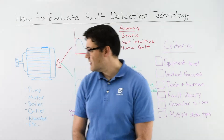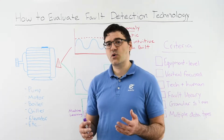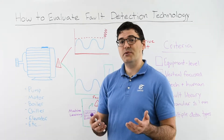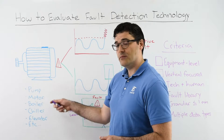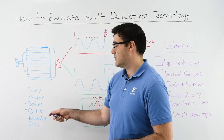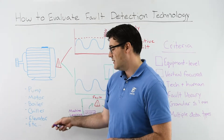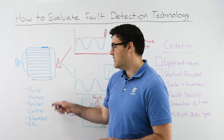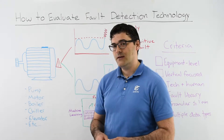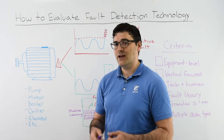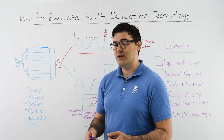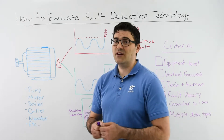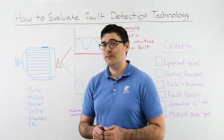First things first, you need to understand what are the critical pieces of equipment that make your building run. Those are your pumps, your motors, your boilers, your chillers, your elevators, etc. If any one of those pieces of equipment fails, breaks down, or has any issues, that's going to make an impact potentially financially as well as on tenant comfort. And we don't want that.